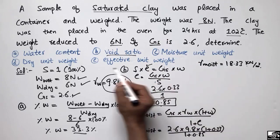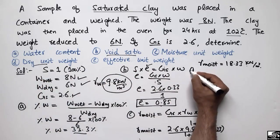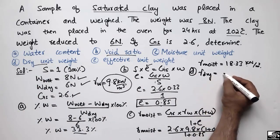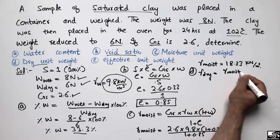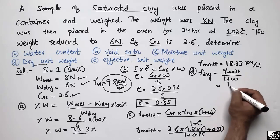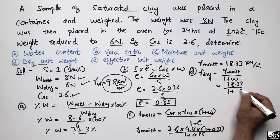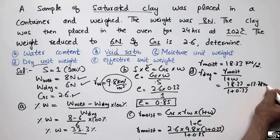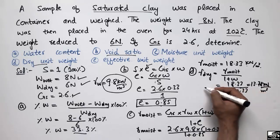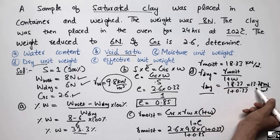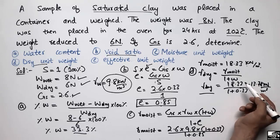To find the dry unit weight, we use the equation: γ_dry = γ_moist / (1 + w). γ_moist is 18.33 divided by 1 plus 0.33, which gives a dry unit weight of 13.78 kN/m³. So the dry unit weight of this soil is 13.78 kN/m³.